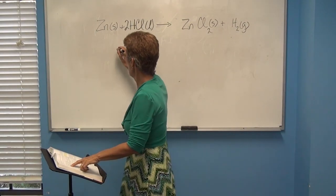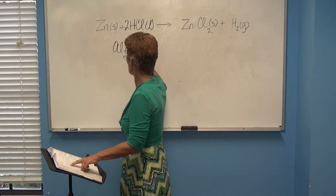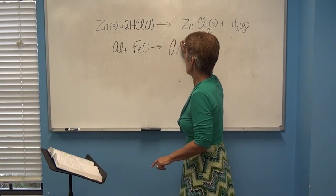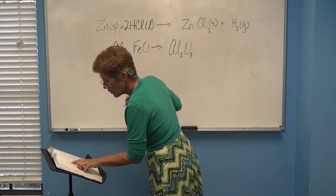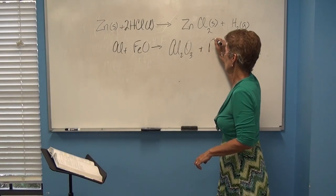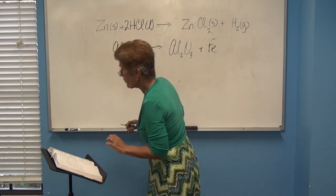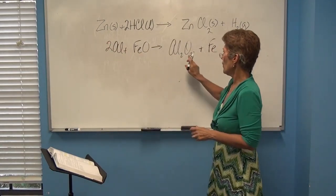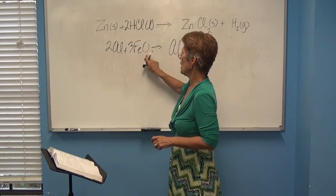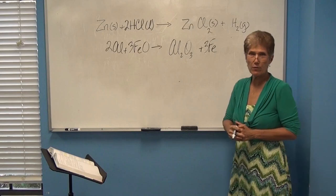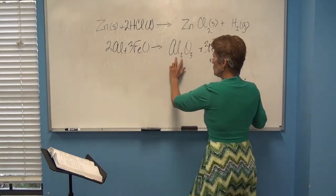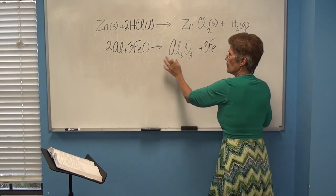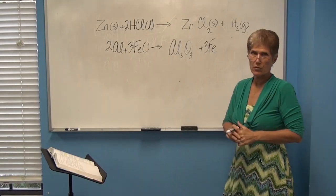Next: aluminum plus iron oxide yields aluminum oxide plus iron. We have two aluminums, so adjust accordingly. We have three oxygens, so adjust for three oxygens — but now there are three irons, so balance those too. Result: two aluminums/two aluminums, three irons/three irons, three oxygens/three oxygens — balanced.